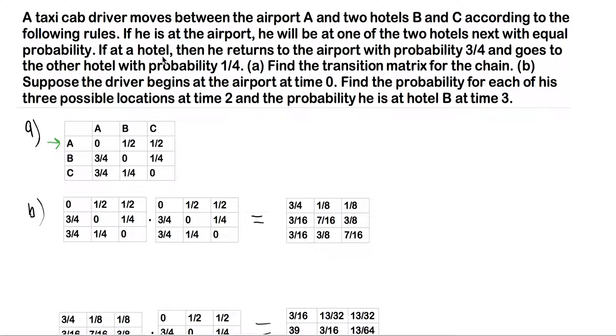well, it says that either we go to hotels B or C with equal probability, which would be one-half apiece. So starting at A and then going to B here, it's one half. And likewise with C.